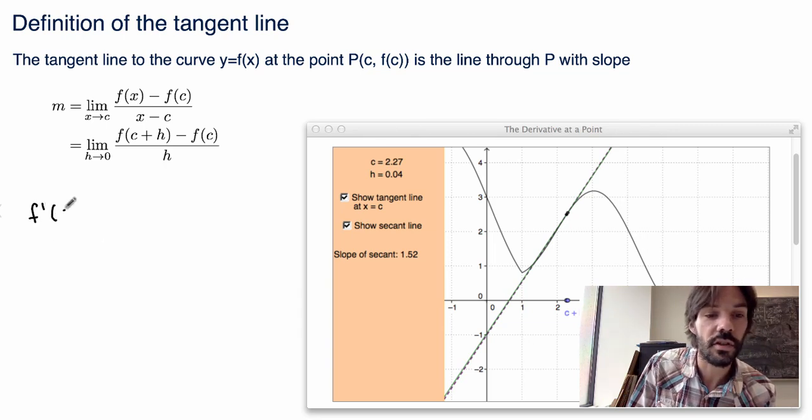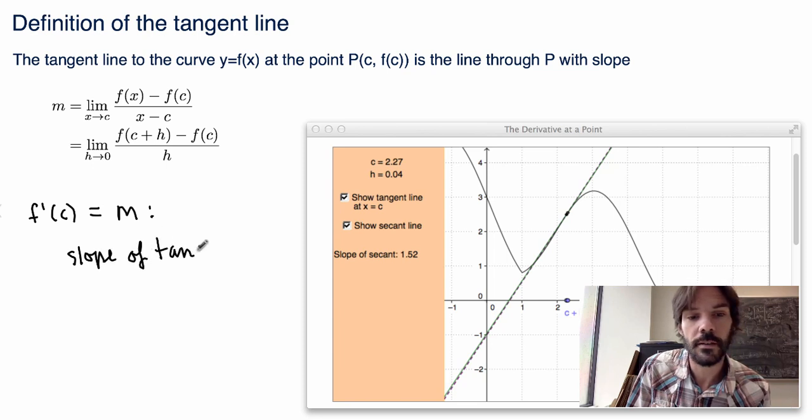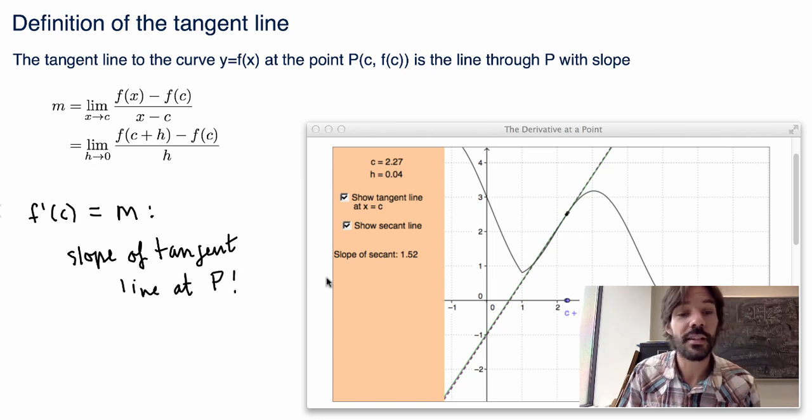f'(c), so the derivative of my function at the point c, is exactly the same thing as m, which is the slope of the tangent line at the point P. Isn't it great?